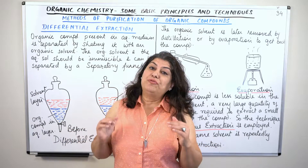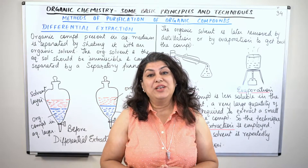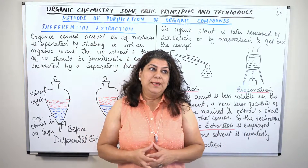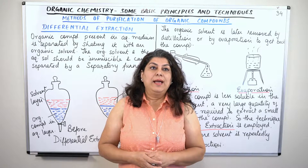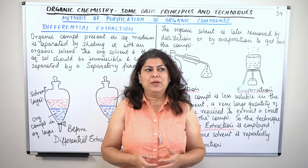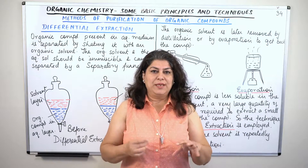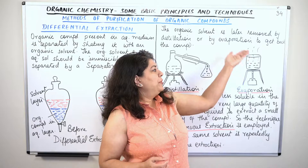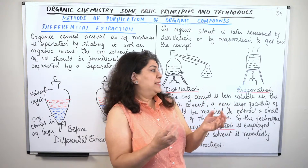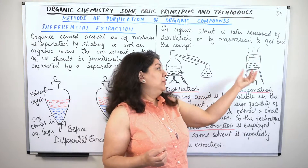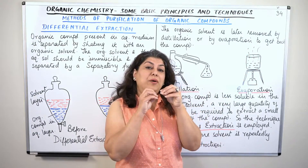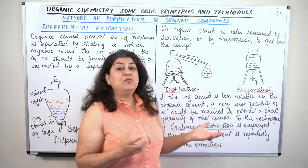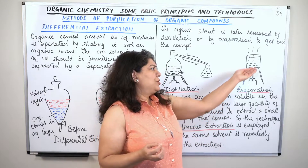In this video I am going to talk about the fourth method, which is differential extraction. Let us assume you have a compound that is soluble in water. We can separate it by evaporation — we boil off the water while the compound remains, since it is non-volatile and does not vaporize at 100°C. So the simple method would be to just evaporate the water.